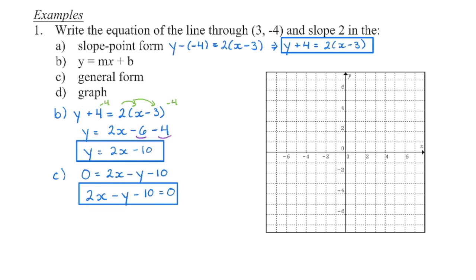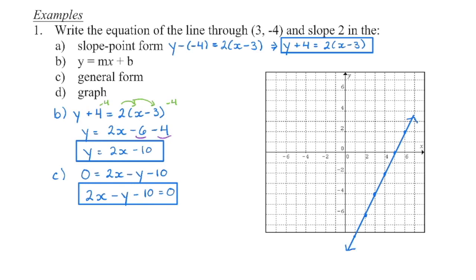Now we create the graph. You have a couple of ways: start with the given point and use your slope, start with the y-intercept and use your slope, or find the x and y-intercepts and connect them. All will produce the same graph. Check: a positive slope means the graph rises to the right — good. It must pass through the point 3, negative 4 — good. The y-intercept should be negative 10, so check that it crosses there on the y-axis.